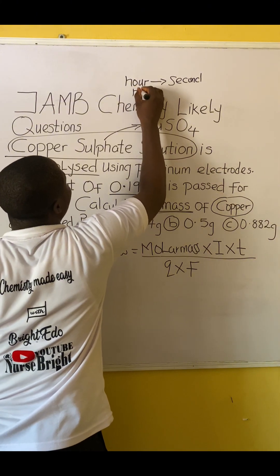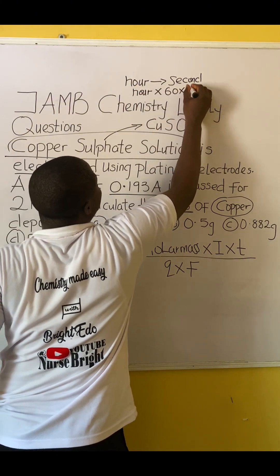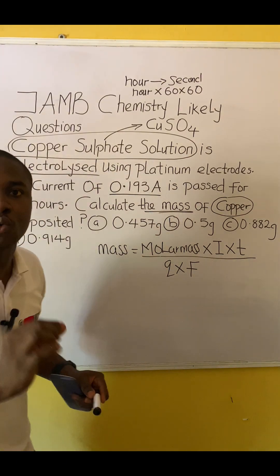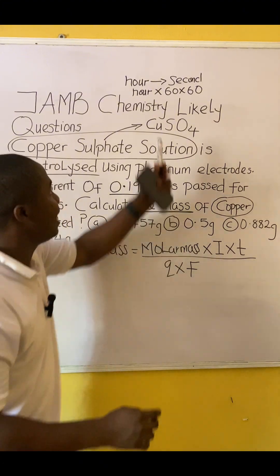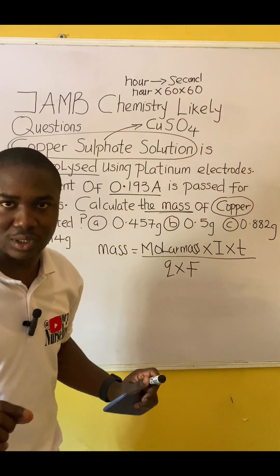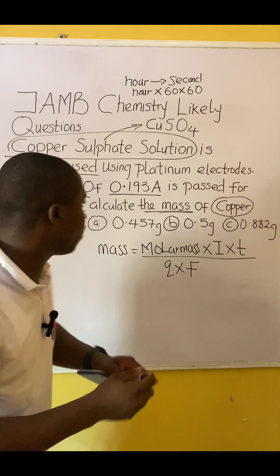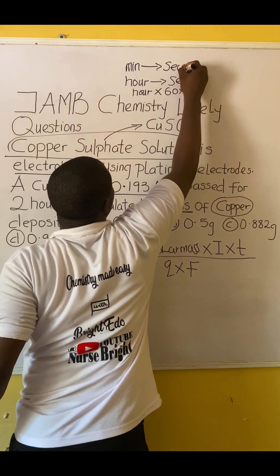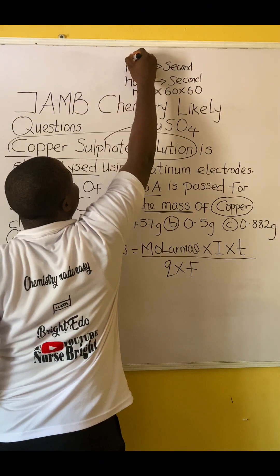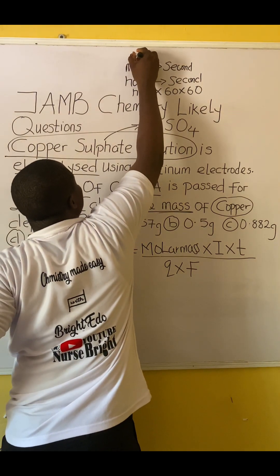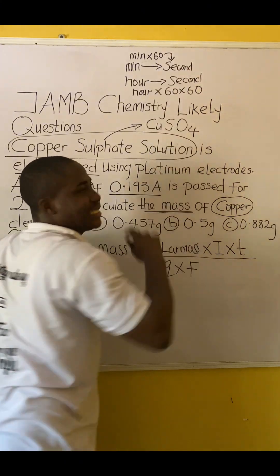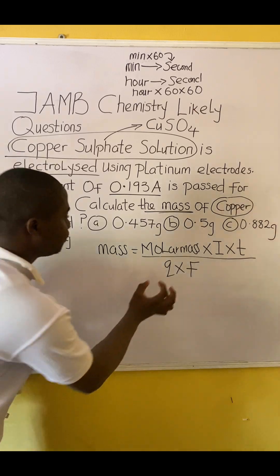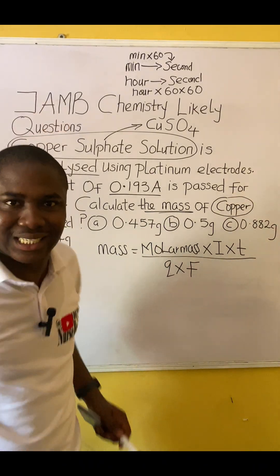To convert a value in hours to seconds, simply multiply by 60 × 60. In this question, the time given is two hours, so two hours times 60 times 60 gives 7200 seconds. If the time is expressed in minutes, multiply by just 60 — minutes × 60 gives seconds. If it's in hours, multiply by 3600.